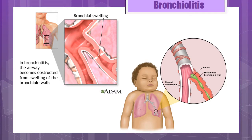Now we're going to look at bronchiolitis. It's a common viral infection of the small airways, also known as bronchioles, in the lower respiratory tract. It is most common in children ages 2 to 12 months, with peak incidence at six months. The small diameter of the small child's bronchioles makes them more susceptible to obstruction when inflamed. It rarely occurs after the age of two. Obstruction can result from inflammation, edema, and excess mucus, often leading to atelectasis.